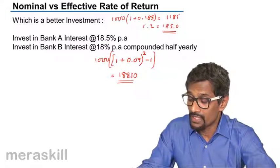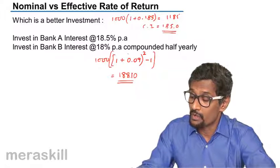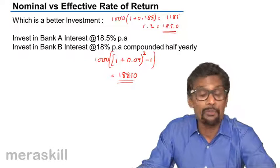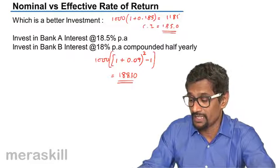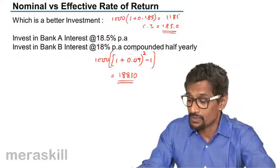So the net effective rate is going to be much different from this. The net effective rate will actually in this case be 18.81 percent, because 188.10, 1,000 into 100 will give you 18.81 percent.